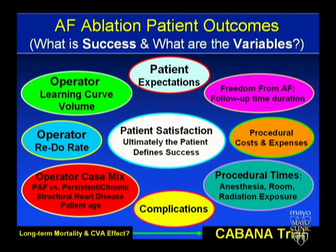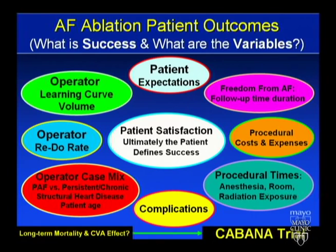The outcomes of AF ablation were discussed in the consensus document, covering issues related to extent of follow-up, monitoring, patient mix, volume of the center, operator, definition of recurrent atrial fibrillation, cost of the procedure, and associated complications — all striving to get uniformity across our discipline in reporting these outcomes.